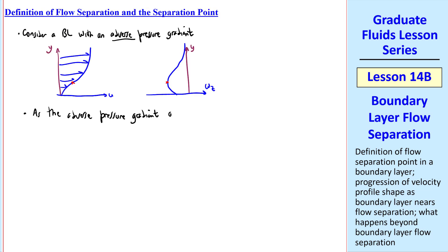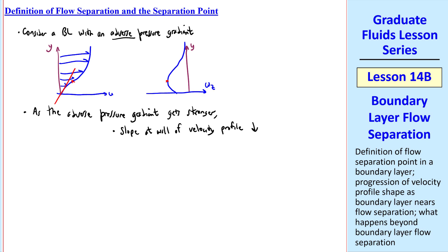As the adverse pressure gradient gets stronger, two things happen. The slope at the wall of the velocity profile gets smaller. This is the slope here, but it will work its way towards a smaller value. And note that we're plotting u on the horizontal axis, so a smaller slope is more vertical on this plot. Also, omega z at y equals 0 moves towards 0. In other words, this point starts moving towards the origin on this plot.